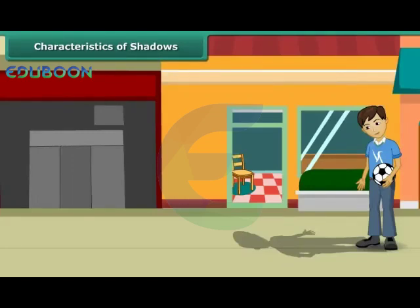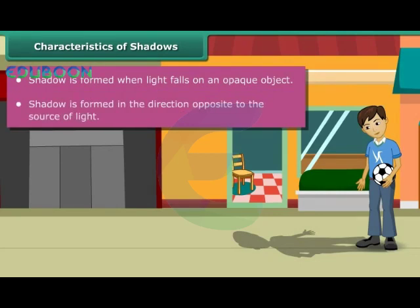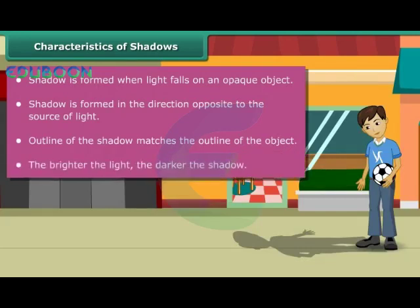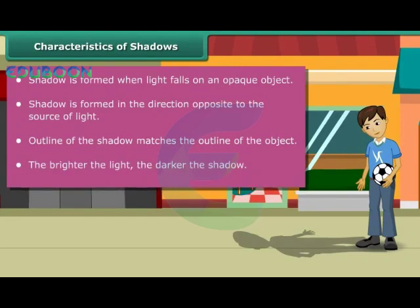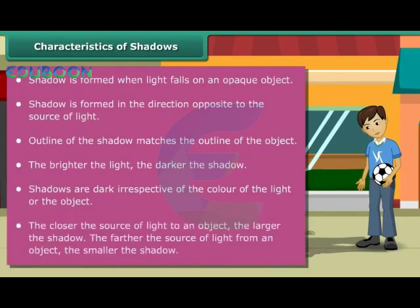Let us list the important characteristics of shadows. Shadow is formed when light falls on an opaque object. Shadow is formed in the direction opposite to the source of light. The outline of the shadow matches the outline of the object. The brighter the light, the darker the shadow. Shadows are dark irrespective of the color of the light or the object. The closer the source of light to an object, the larger the shadow. The farther the source of light from an object, the smaller the shadow.